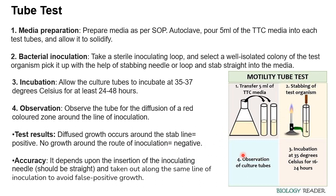The accuracy of this test depends upon the insertion of your inoculating needle — it should be straight. You should ensure that a sufficient amount of inoculum is picked and that the bacterial transfer is done properly. Take out the needle along the same line of inoculation to avoid false positive growth. You should not do stab inoculation five to seven times — just one to two times through the same line of inoculation is sufficient.